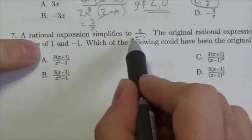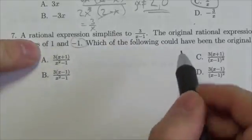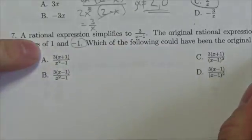Well now notice this one has a non-permissible of 1. So it's this negative 1 that we're missing. So which of the following could have been the original rational expression?